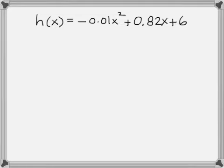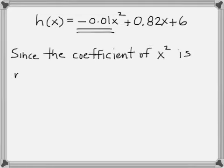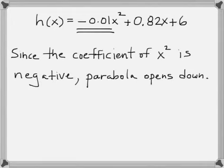What you need to do is take a look at the number with x². Here it's negative, and if you have a negative number with x² when it's in the standard format, it's one of the downward opening parabolas.